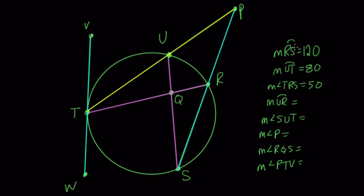The measurement of arc RS is 100. That curve symbol is arc. For RS, it's this arc right here. It's 120. The measurement of arc UT is 80, so that's over here. And the measurement of angle TRS is 50. So this angle right here is 50 degrees.